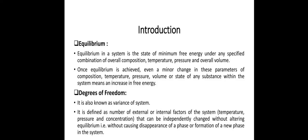Degree of Freedom is also known as variance of system. It is defined as a number of external or internal factors of the system that can be independently changed without altering equilibrium, that is, without causing disappearance of the phase or formation of a new phase in the system.